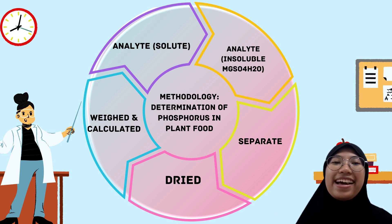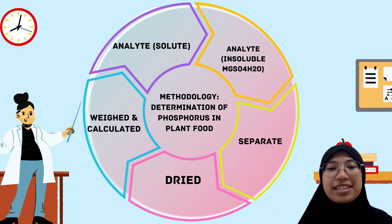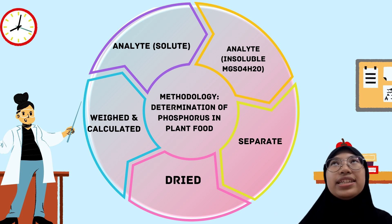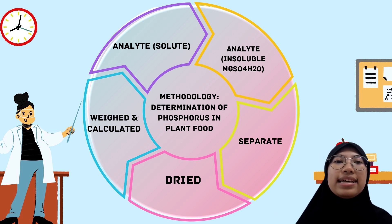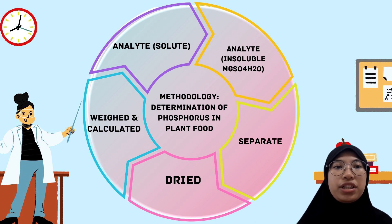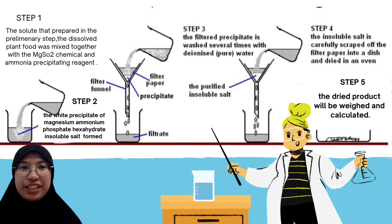At the first step, the analyte in solid form was prepared in the preliminary step by dissolving the plant food with chemical reagents such as magnesium sulfate. After that, the insoluble salt — magnesium ammonium phosphate hydrate — was acquired in the precipitation method. Then the insoluble salt was separated through the filtration process, washed, dried, and calculated.